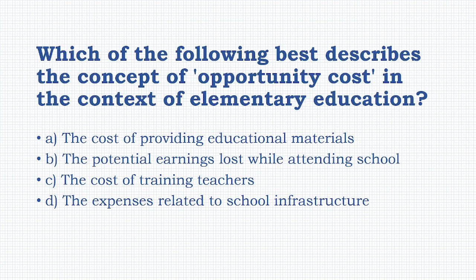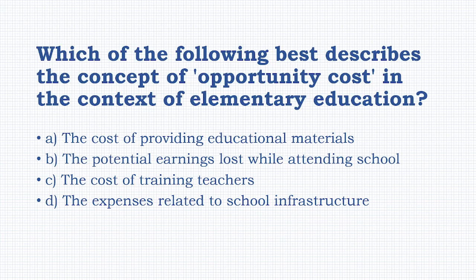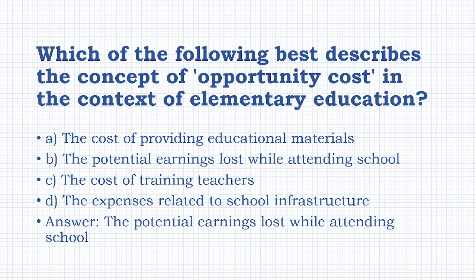Which of the following best describes the concept of 'opportunity cost' in the context of elementary education? Options: the cost of providing educational materials, the potential earnings lost while attending school, the cost of training teachers, the expenses related to school infrastructure. The answer is: the potential earnings lost while attending school.